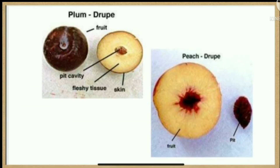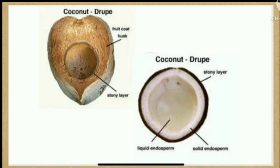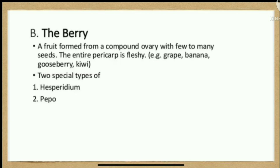These are some pictures showing dissection of plum and coconut. The Berry: a fruit formed from a compound ovary with few to many seeds. The entire pericarp is fleshy. Examples include grape, banana, gooseberry, and kiwi. Two kinds are hesperidium and pepo.